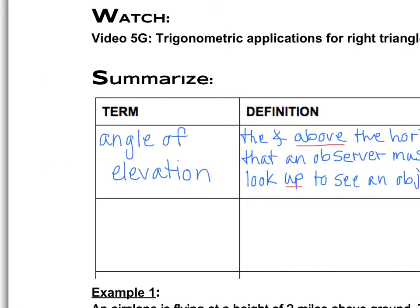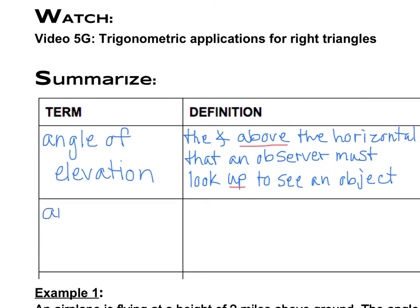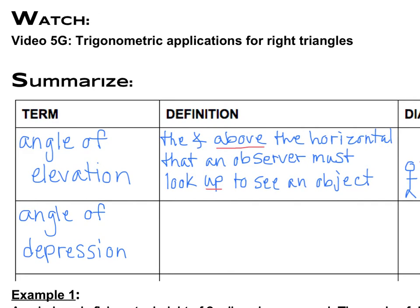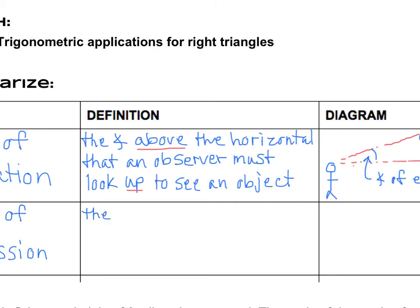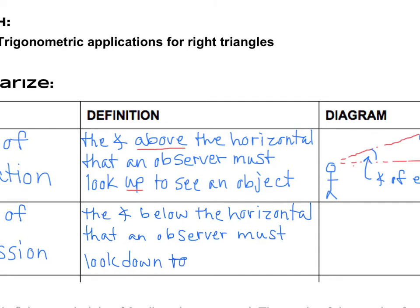Our second one is similar to it. Instead of angle of elevation, we're going to have angle of depression. And the definition is also very similar to the angle of elevation's definition, and it is the angle, you can guess I think, below the horizontal, that an observer this time must look down to see an object. And again, it's a depression angle, so it makes sense that we're using the words below and down in that definition, I hope.